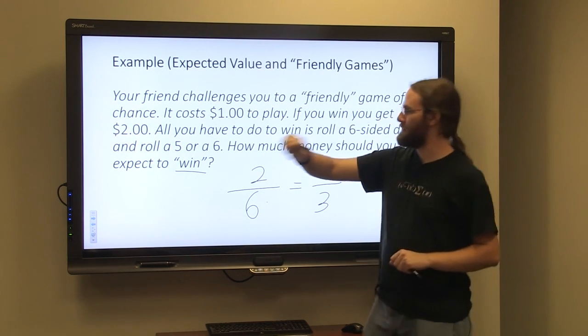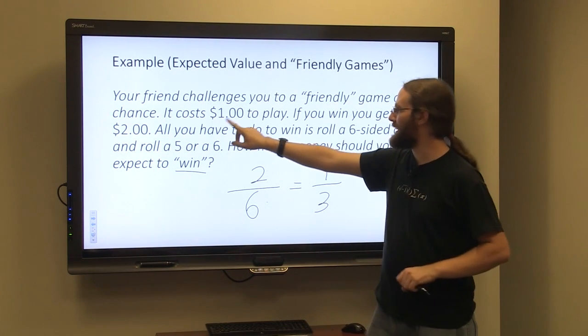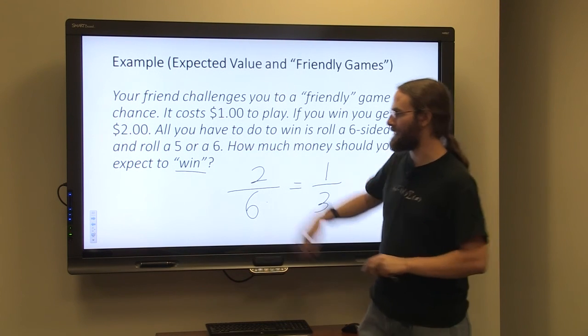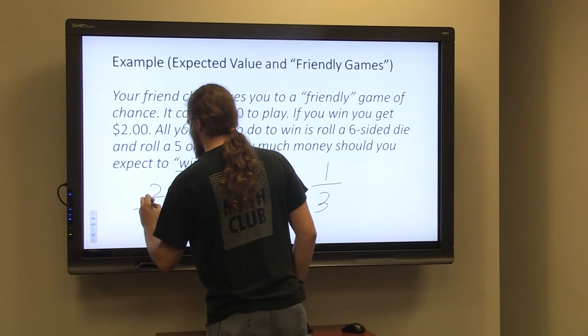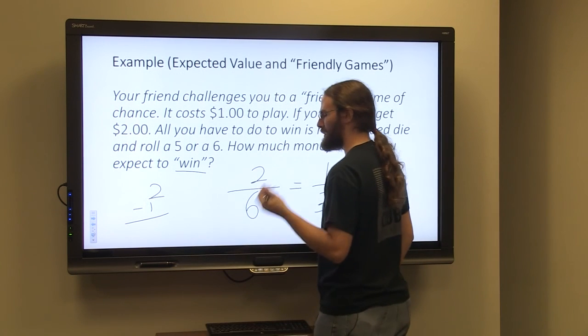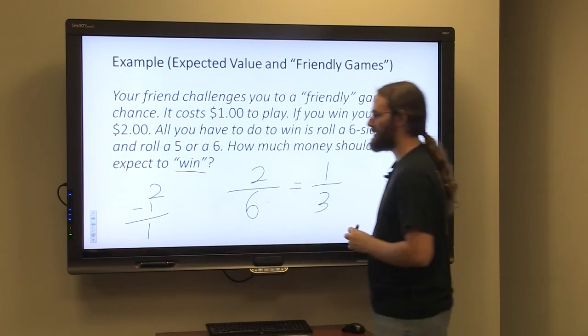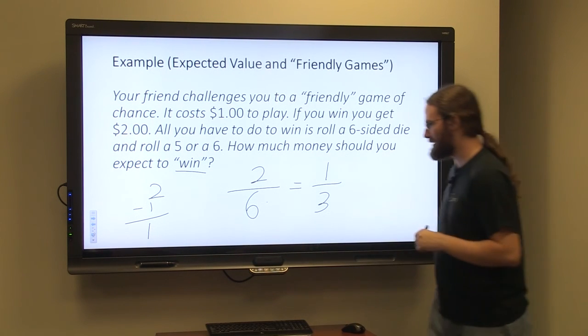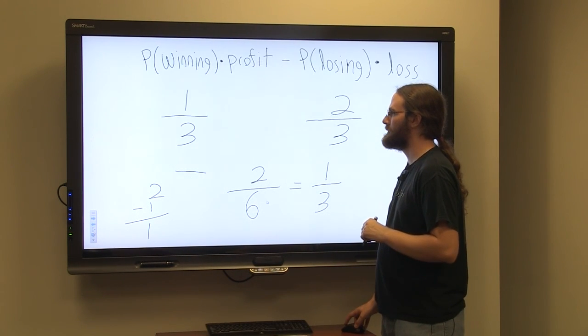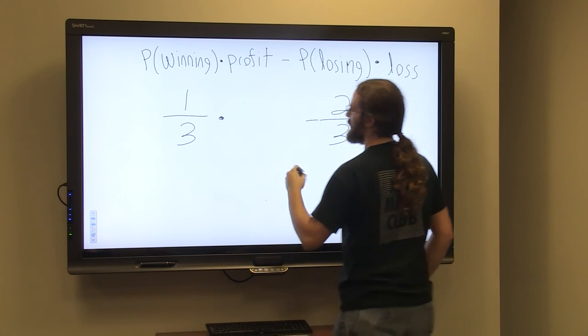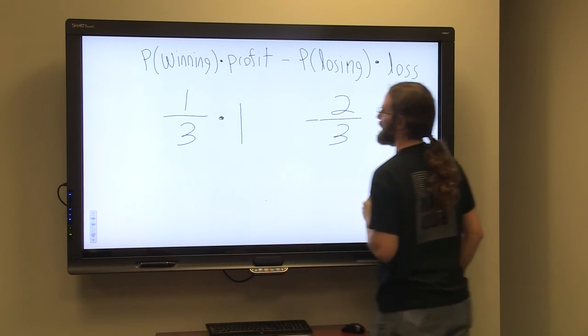All right. So you win two dollars. You win two dollars, but it costs you a dollar to play the game. So you need to do two minus one to determine that you would profit a single dollar by playing. So we would do one third times a dollar, we would profit a dollar.